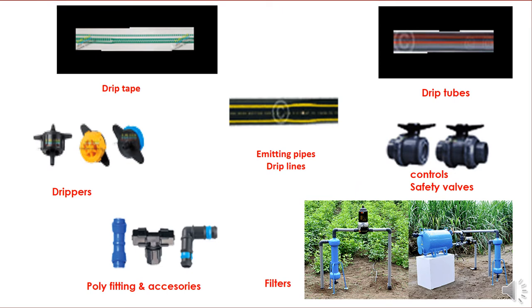The different components of drip irrigation include drip tape, drip tubes, drippers, emitting pipes, drip lines, control and safety valves, poly fittings and accessories, filters, etc.